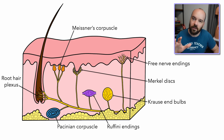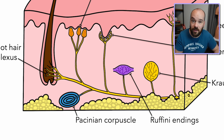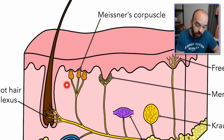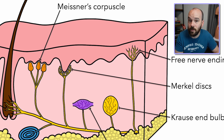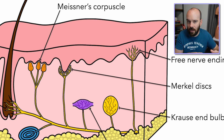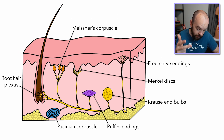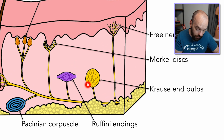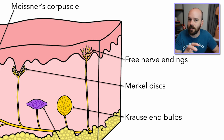Those are all the sensory receptors in the skin — let's do a quick recap. Root hair plexus detects hair movement — mechanoreceptor. Pacinian corpuscle detects deep pressure, fast adapting. Meissner's corpuscle is superficial, detects light touch, fast adapting — good for movement. Merkel's discs are non-encapsulated, detect light touch, slow adapting — good for shape. Ruffini's endings detect stretch, slow adapting. All of those are mechanoreceptors. Krause end bulbs are thermoreceptors detecting cold. Free nerve endings can be nociceptors for pain, or thermoreceptors with either cold receptors or warm receptors detecting specific temperature ranges.